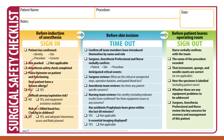The next phase is time out — done before the first skin incision. All team members introduce themselves by name and role. The surgeon, anesthesia professional, and nurse verbally confirm the patient identity, site, and procedure. Anticipated critical events are discussed: surgeons review critical or unexpected steps, operative duration, and anticipated blood loss; the anesthesia team reviews patient-specific concerns; the nursing team confirms sterility and any equipment issues. Antibiotic prophylaxis must be given within the last 60 minutes.